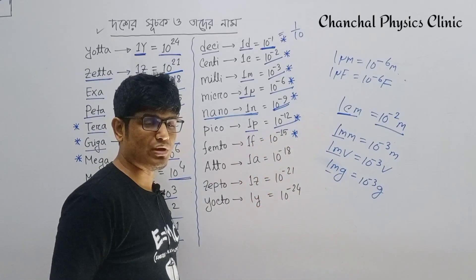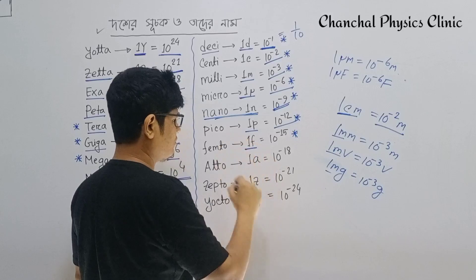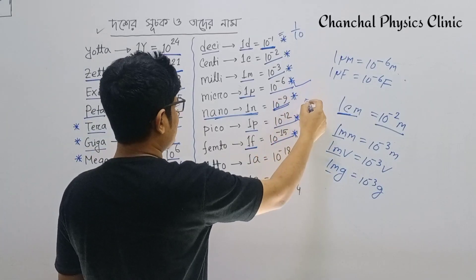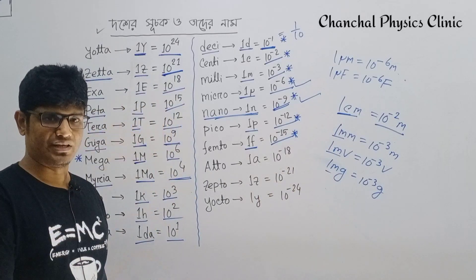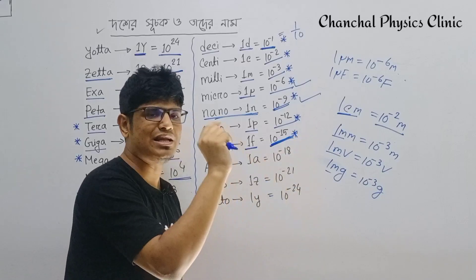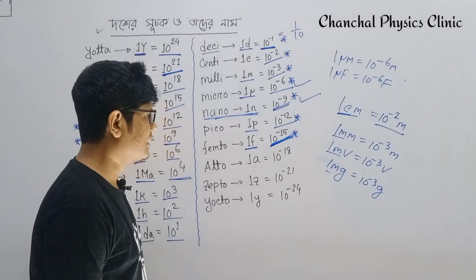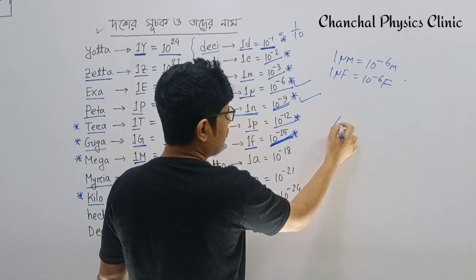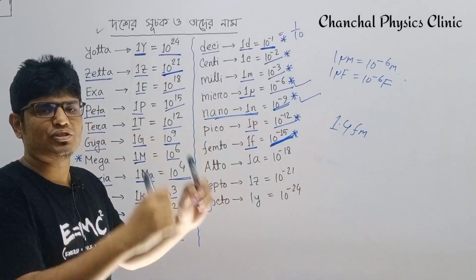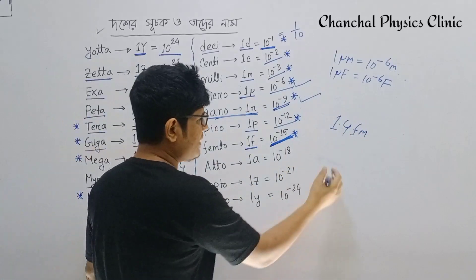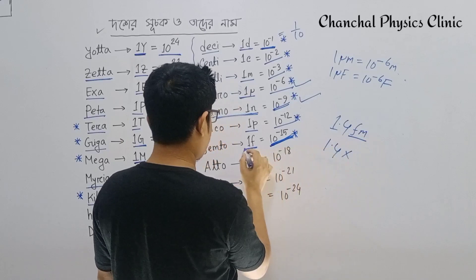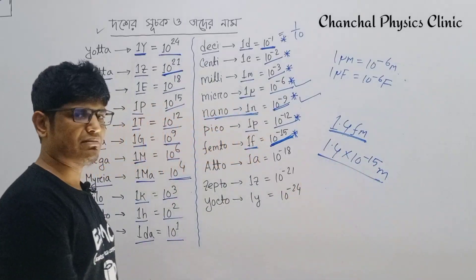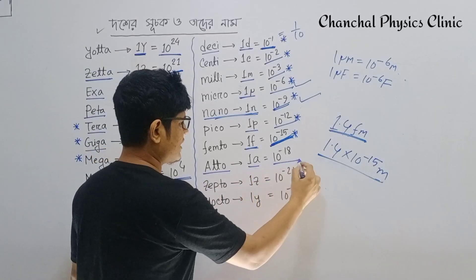Femto is 10 to the power minus 15. Micro is at the atomic level unit. Nano is also at the atomic level. Femto is a nuclear level unit — nuclear distances are measured at 10 to the power minus 15 meters.